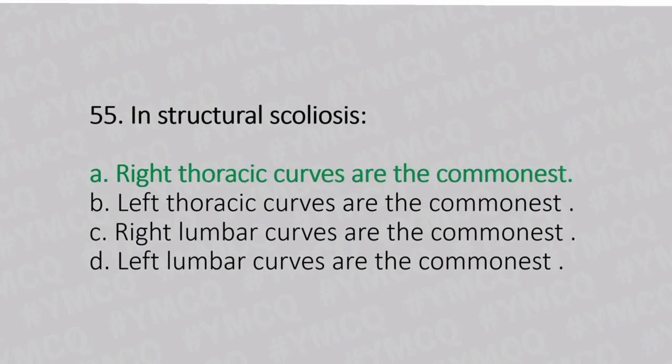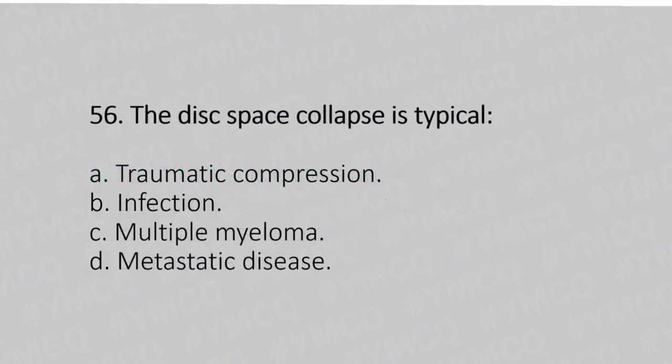Now let's move to question number 56. Disc space collapse is typical of. Option A: rheumatic compression. Option B: infection. Option C: multiple myeloma. Option D: metastatic disease. And the answer is Option B, infection.